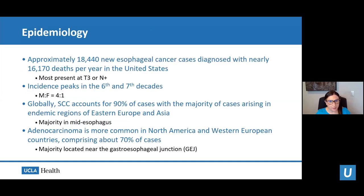With respect to epidemiology, there are approximately 18,000 new esophageal cancer cases diagnosed with just about 16,000 deaths per year in the United States. Unfortunately, most patients do present with locally advanced disease. The incidence peaks in the sixth and seventh decades of life, and men are four times as likely as women to get esophageal cancer. Globally, squamous cell carcinomas account for about 90% of cases, with the majority arising in endemic regions of Eastern Europe and Asia, primarily in the mid-esophagus.